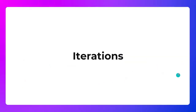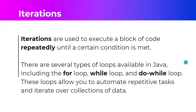Now let's proceed with iterations. Iterations are used to execute a block of code repeatedly until a certain condition is met. In Java there are several types of loops: the for loop, the while loop, the do-while loop, and the for-each or enhanced for loop.